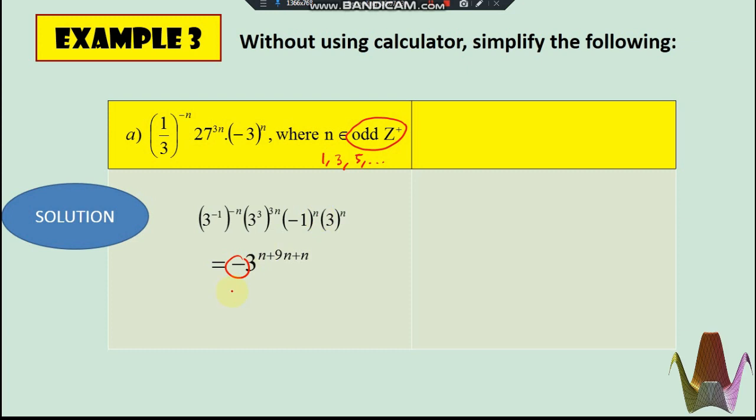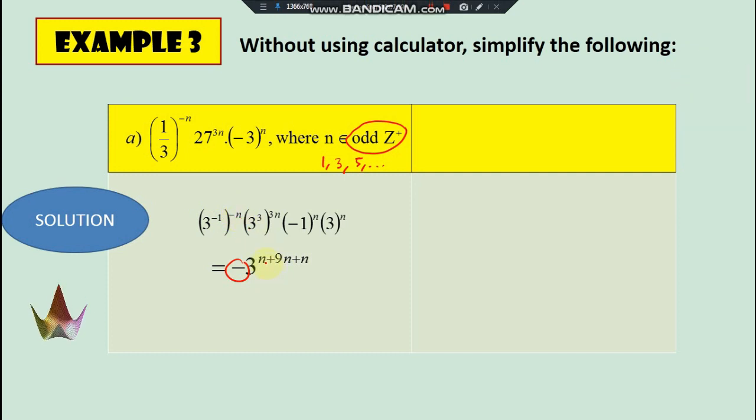So now we would have everything to be in n. Negative one times by negative n is actually n. So that's why n plus nine n and plus n as well. So that should be our final answer, which is negative three to power of 11n, because they are being summed up together. So what happen to this, try to do it by yourself. I'm giving you the final answer here.